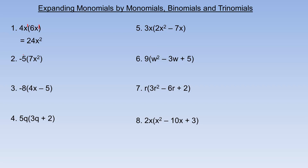Similarly in number 2, we're going to multiply the coefficients together: negative 5 times 7 is negative 35, and then there's just a single x squared here — no additional x to multiply — so it's just negative 35x squared.